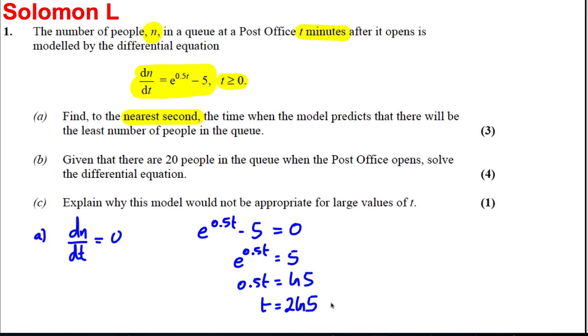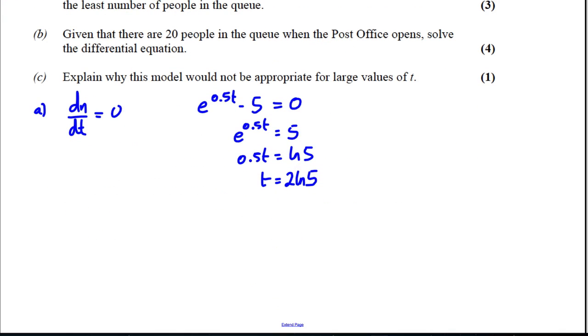And how do you know that this is a minimum? After all, how do you know it's not a maximum? Well, if I differentiated this another time, I would get something that's positive, so it tells me it's a minimum. If I worked out d²n/dt², it would be 0.5 e to the 0.5t. I know that an exponential is always positive and 0.5 is positive, so therefore the second differential is positive, so this is clearly a minimum.